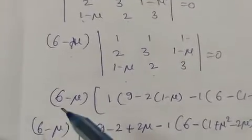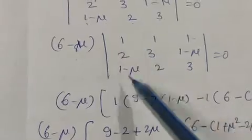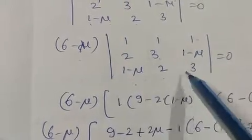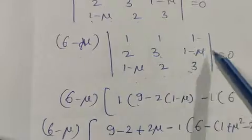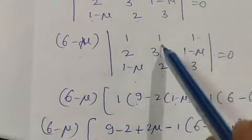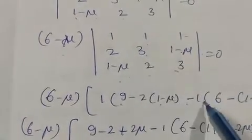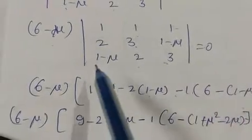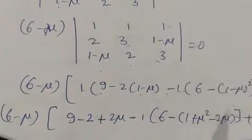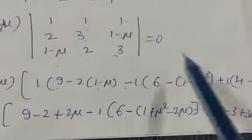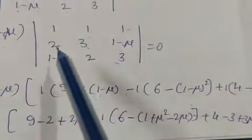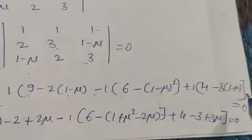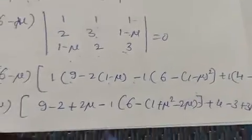Expanding: (6-mu) times the determinant. Expanding along the first row: 1 times [9 minus 2(1-mu)], minus 1 times [6 minus (1-mu)²], plus 1 times [4 minus 3(1-mu)] equals 0.